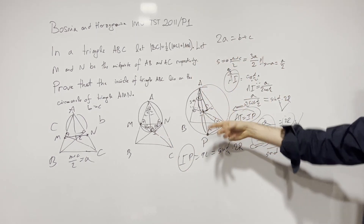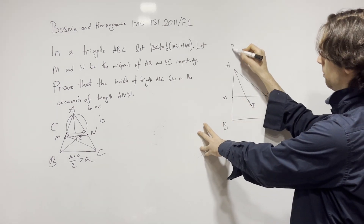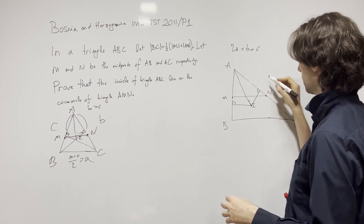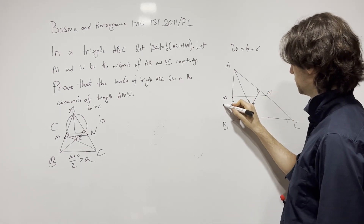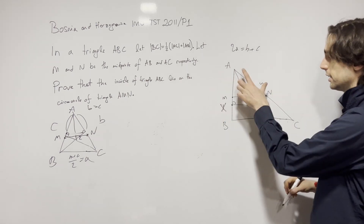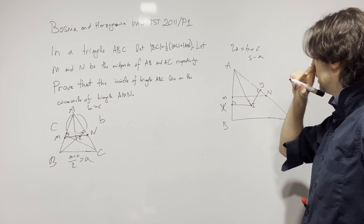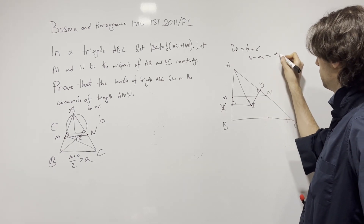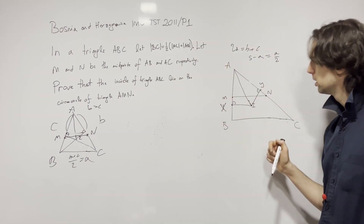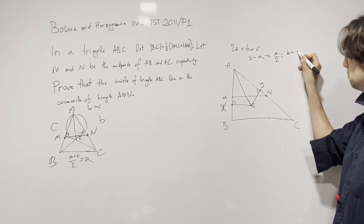Let me draw a better picture. We have 2A equals B plus C. When we put these perpendiculars down, call the feet X and Y. Then AX and AY are each equal to S minus A, which we've proven equals A/2, which equals (B+C)/4. Also AM equals C/2 and AN equals B/2.